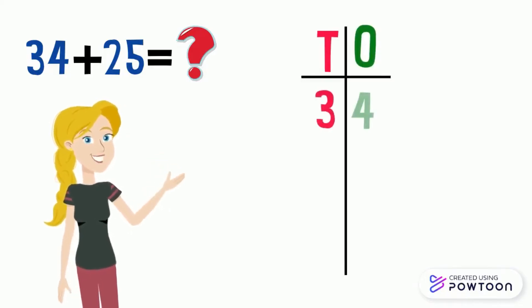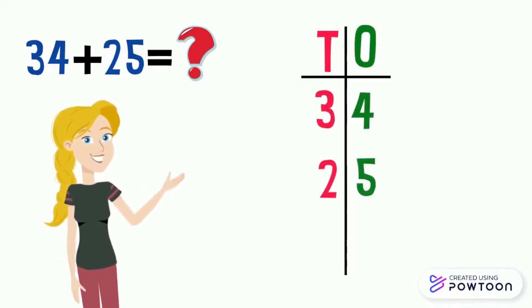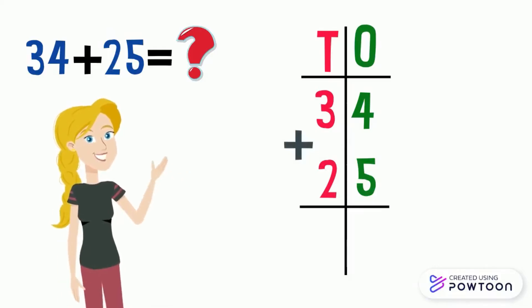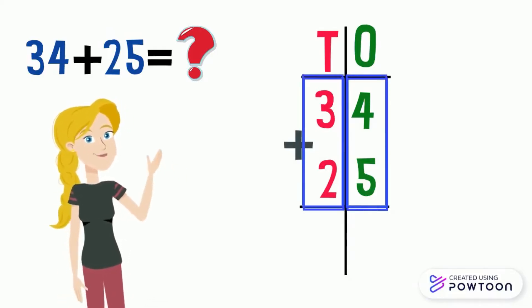We should put the numbers 34 and 25 in the chart, and don't forget to put the plus sign to the left. And, as you see, the ones digits are lined up, the same for the tens digit.